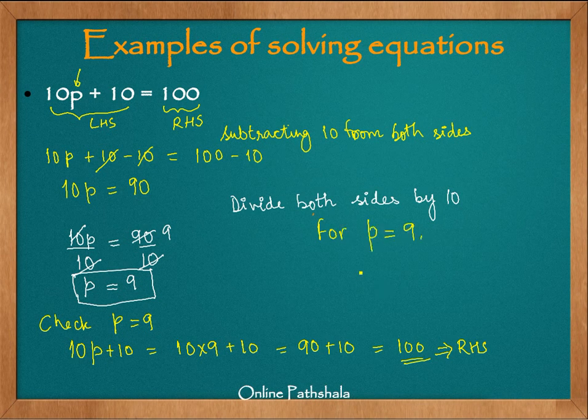This is nothing but the right hand side. So we can conclude that for the value of p being 9 the right hand side equals left hand side. And therefore this is a solution of this equation.